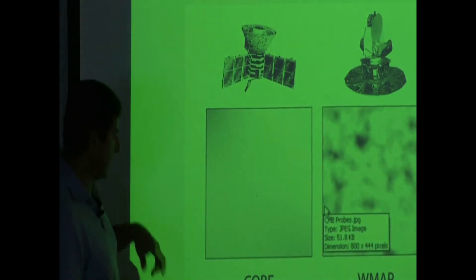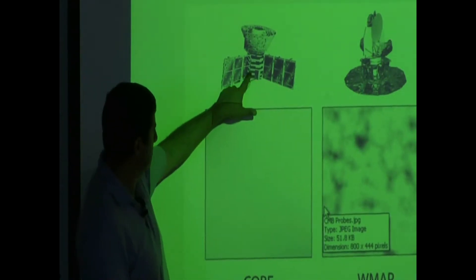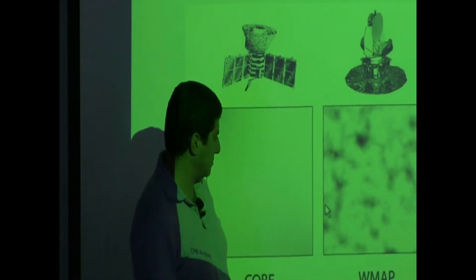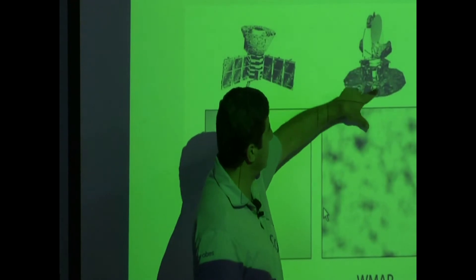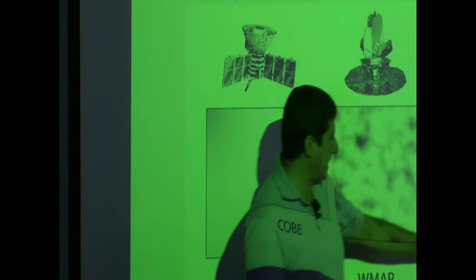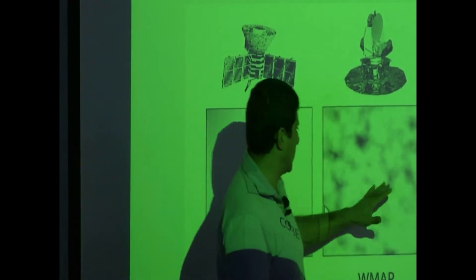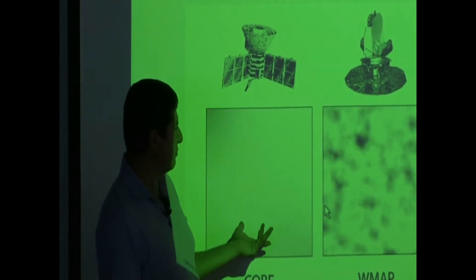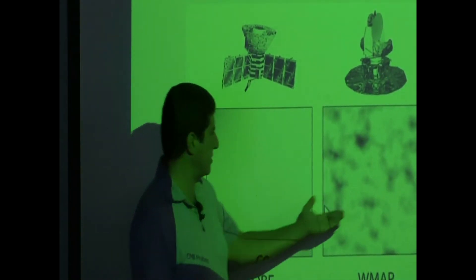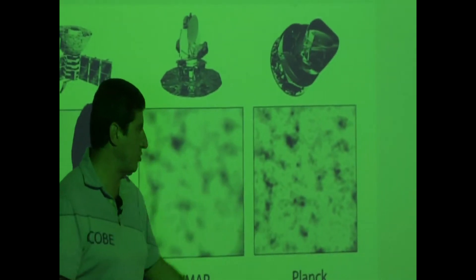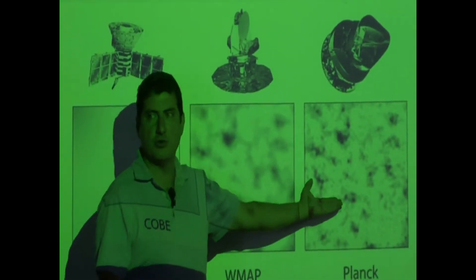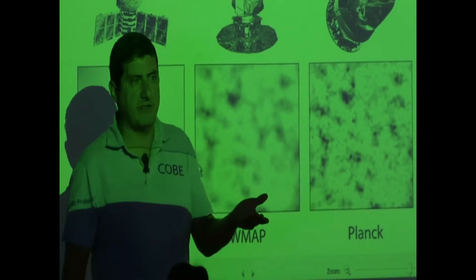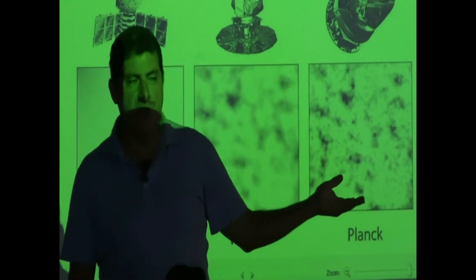These are the pictures of these satellites — the COBE satellite, the WMAP satellite, and the Planck satellite. These are the kinds of pictures they send back. You might say, 'big deal, who cares, what can you tell from this?' But this can tell you a lot about what the universe is — you just have to have a trained mind to know what you're looking for.